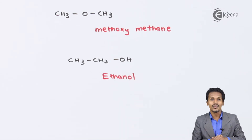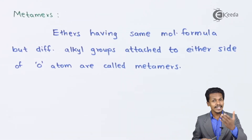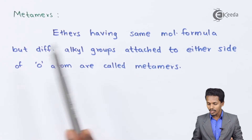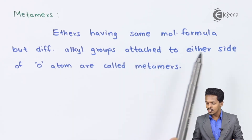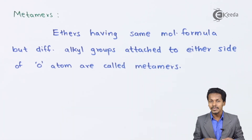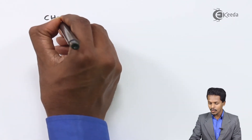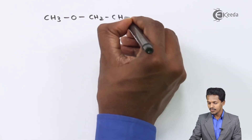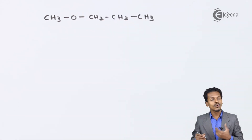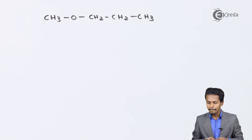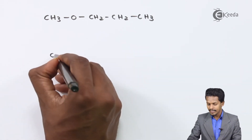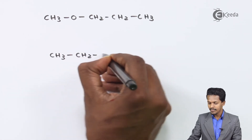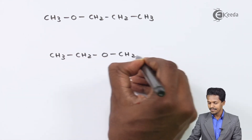Now let us talk about the next type, which is metamerism. Ethers having the same molecular formula but different alkyl groups attached to either side of the oxygen atom are known as metamers, also called positional isomers. For example, methoxypropane is CH3-O-CH2CH2CH3.